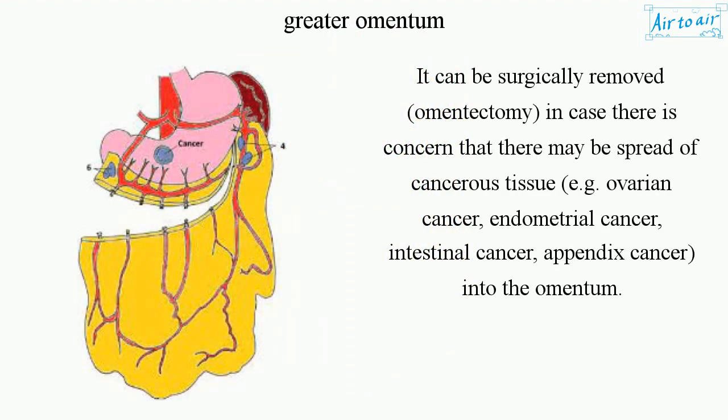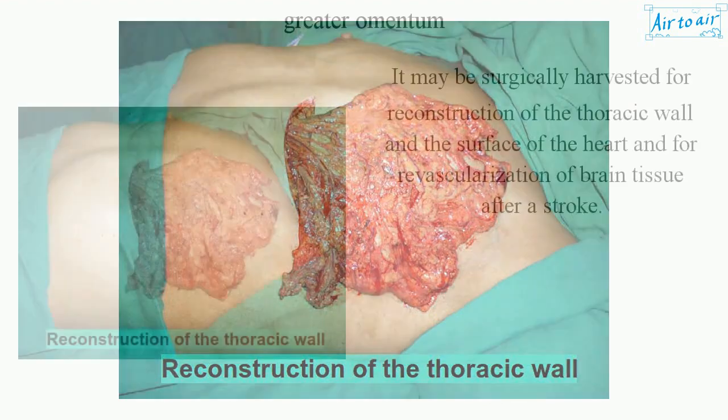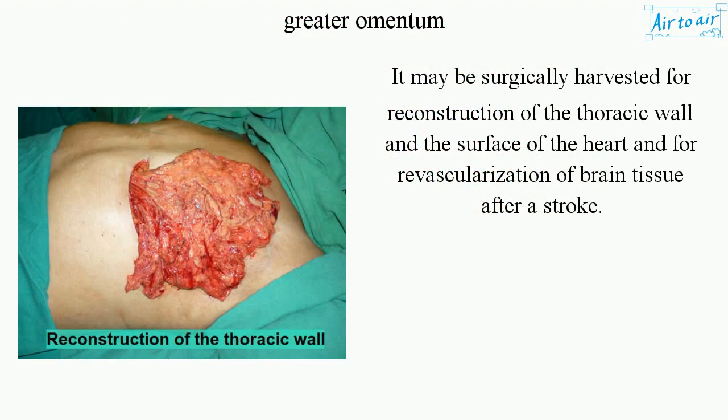It can be surgically removed — omentectomy — in cases where there is concern about spread of cancerous tissue, such as ovarian cancer, endometrial cancer, intestinal cancer, or appendix cancer into the omentum. It may also be surgically harvested for reconstruction of the thoracic wall and surface of the heart, and for revascularization of brain tissue after a stroke.